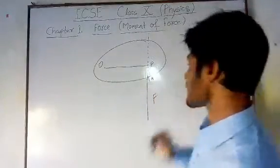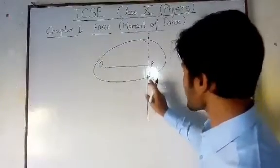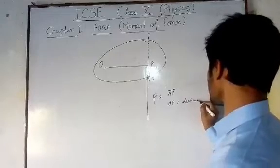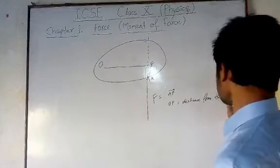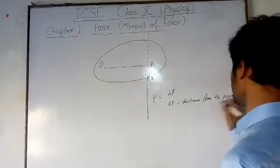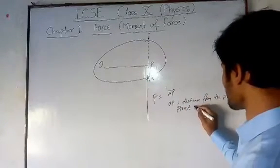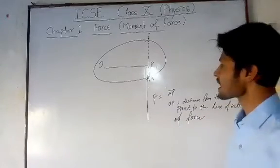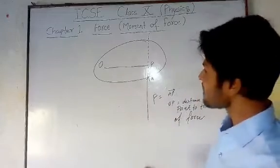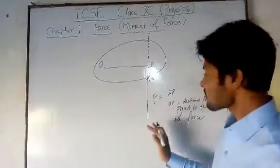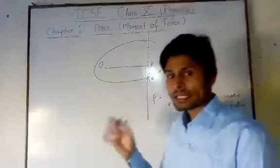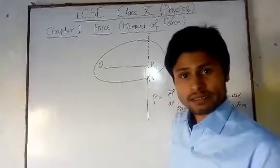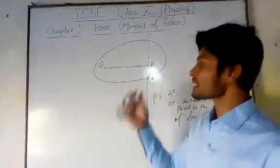Suppose this is the point A where the force is applied, so the force is along A. OP is the perpendicular distance from the pivoted point to the line of action of force. The turning effect depends on the magnitude of the force — if we apply greater force, the turning effect produced will be greater; if we reduce the magnitude of the force, the turning effect will also reduce.